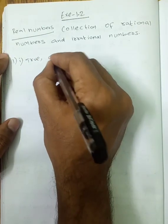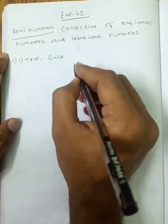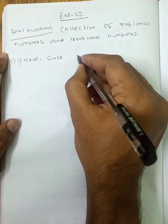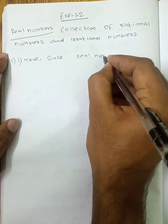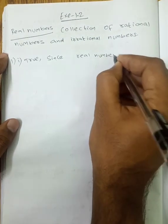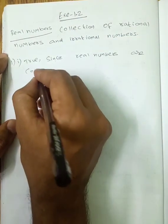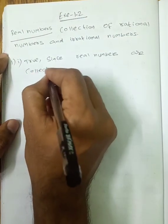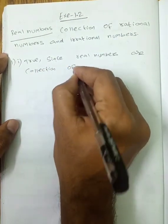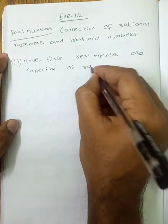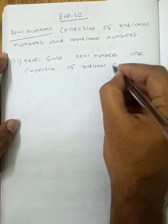Since all irrational numbers are real numbers, real numbers are the collection of rational and irrational numbers. Therefore, every irrational number is a real number — True.